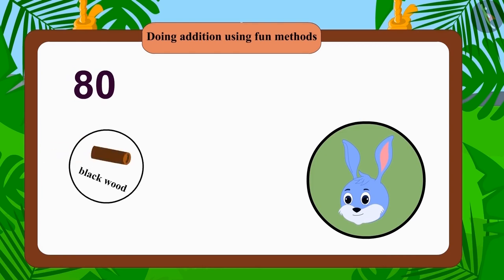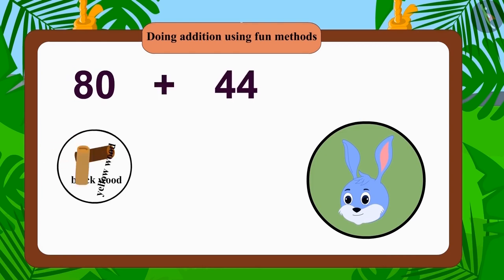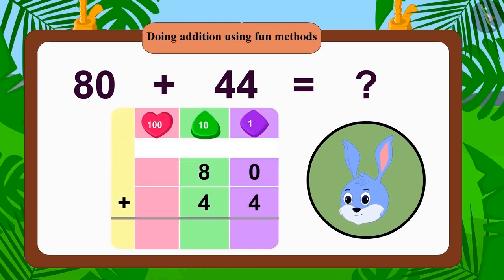If Bunny used 80 black wood and 44 yellow wood, would Bunny still have used only 124 wood? Children, you can find the answer to this question by using the process of adding two digit numbers.